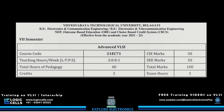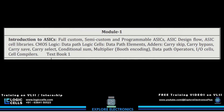Let us get into the first module. Module 1 covers an introduction to ASICs — Application Specific Integrated Circuits. An IC can be application-specific, and it can also be a programmable IC. For example, FPGAs are programmable in-site. There are different types of ICs available in VLSI. This module covers application-specific ICs, which are used for a particular application — we can call them customized ICs.